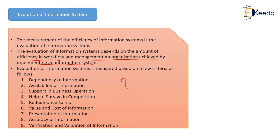There are 9 major criteria we follow to evaluate an information system: 1. Dependency, 2. Availability, 3. Business Operations Support, 4. Help to Survive, 5. Reduce the Uncertainty, 6. Value and Cost, 7. Presentation, 8. Accuracy, 9. Verification and Validation.